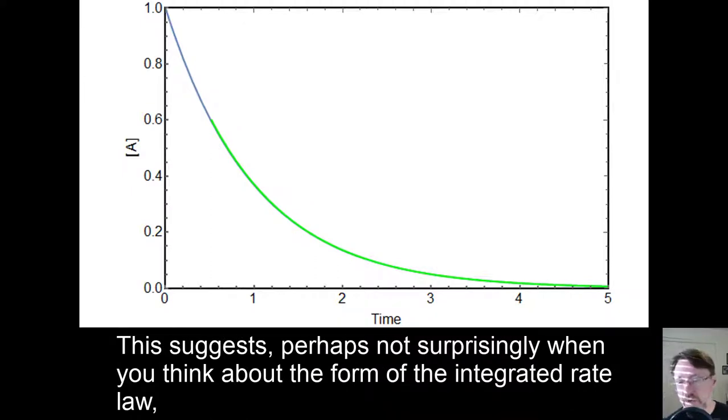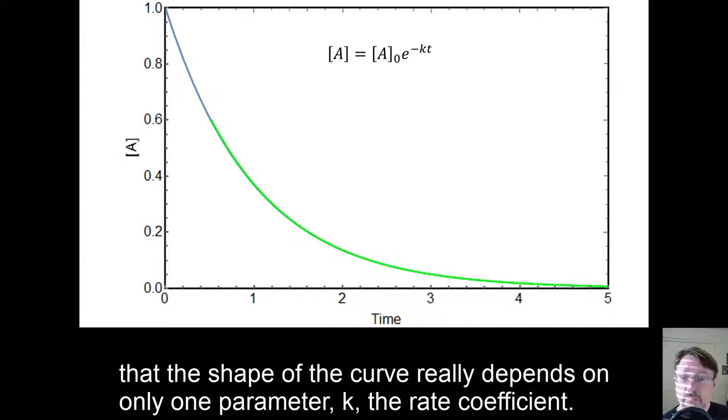This suggests, perhaps not surprisingly when you think about the form of the integrated rate law, that the shape of the curve really depends on only one parameter, k, the rate coefficient.